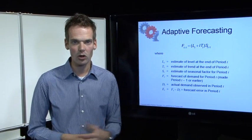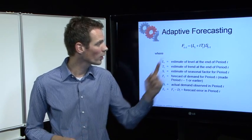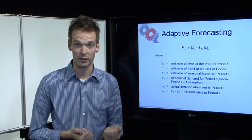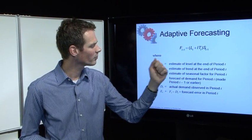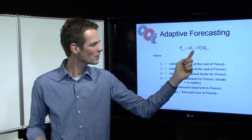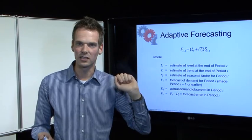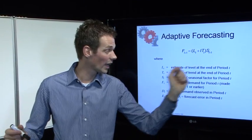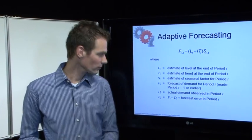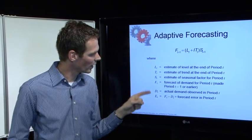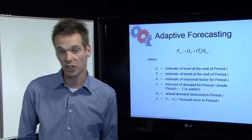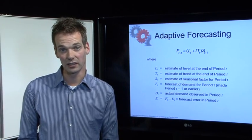The adaptive forecasting works with the same formula as we used in the static method. F(t+1) is L(t) plus L(t)T, and that between brackets times the seasoning. The variables are almost the same as used in the static method.